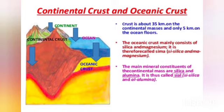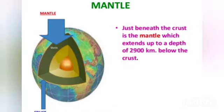Now let us know about continental crust and oceanic crust. Crust is about 35 km on the continental masses and only 5 km on the ocean floor. Oceanic crust mainly consists of silica and magnesium, that is why it is called SIMA — Si means silica and Ma means magnesium. The main mineral constituents of the continental mass are silica and alumina, called SIAL — Si means silica and Al means alumina.